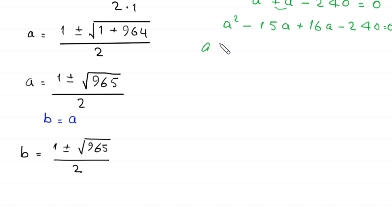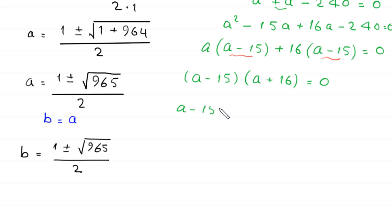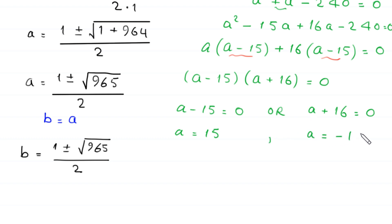From the first two terms we factor out a, leaving (a minus 15), and from the last two terms we factor out 16, also leaving (a minus 15). So the expression factors as (a minus 15)(a plus 16) equals 0. Either a minus 15 equals 0, giving a equals 15, or a plus 16 equals 0, giving a equals negative 16.